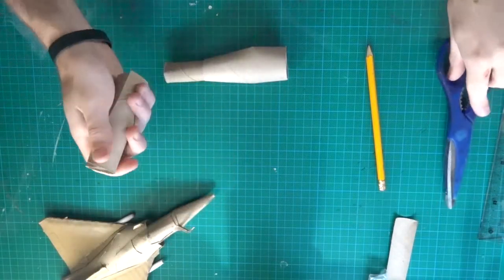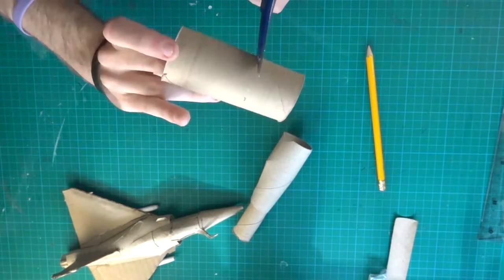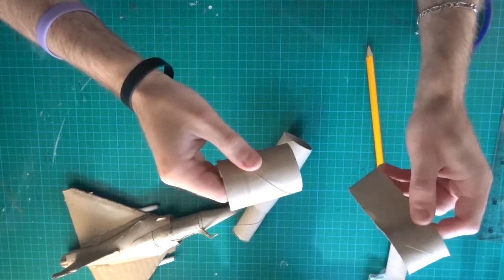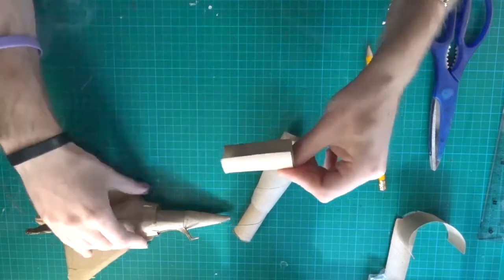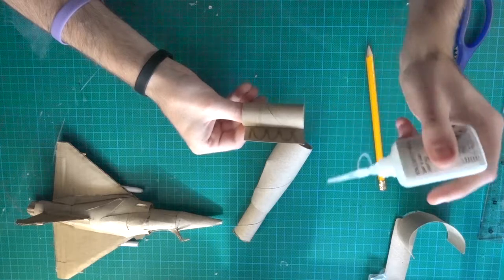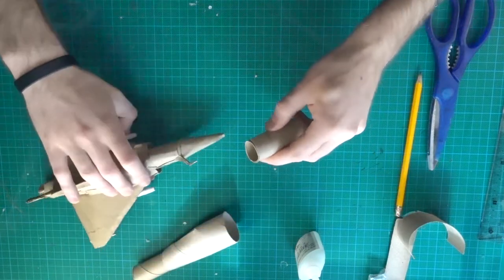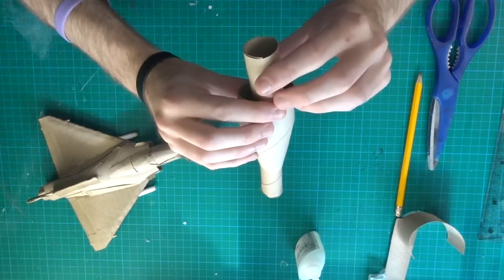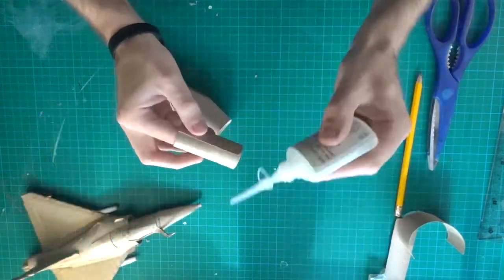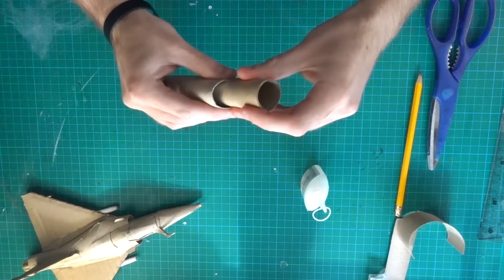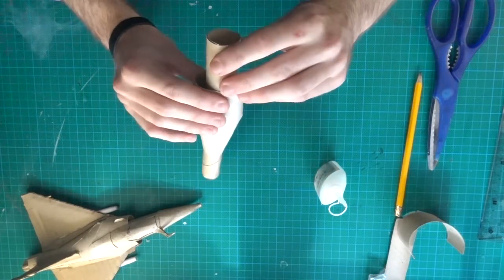With the third tube, I will make the nose. Cut around 1 third and reduce again. Cut around 10 mm inside. Glue it around 10 mm inside.